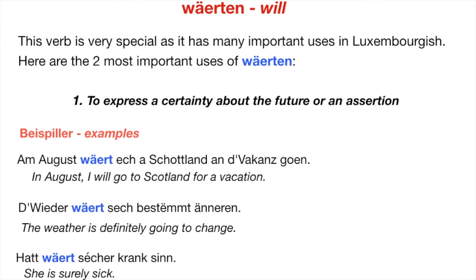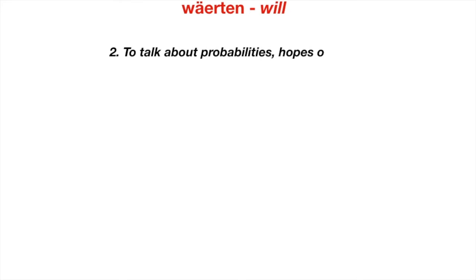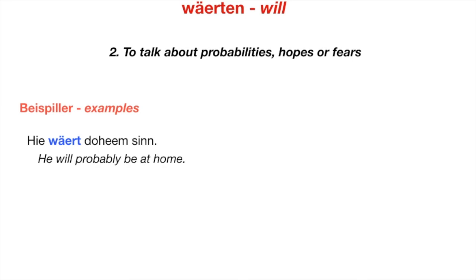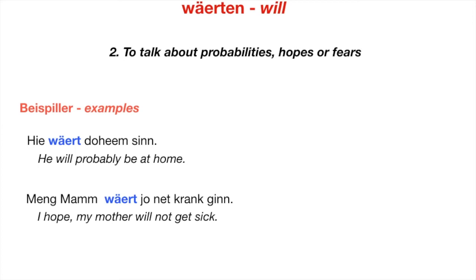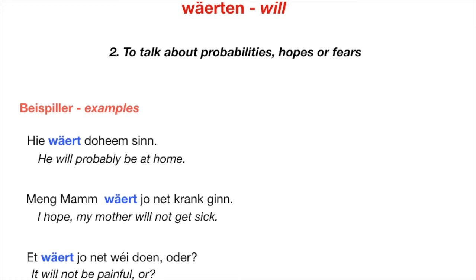The second most important use of Wäerten is to talk about probabilities, hopes, or fears. Examples — probability: 'Hien wäert doheem sinn' — He will probably be at home. Hope: 'Meng Mamm wäert jo net krank ginn' — I hope my mother will not get sick. And to express a fear: 'Et wäert jo net weidoen' — It will not be painful — a question you might ask a doctor or when you are at hospital, for example.